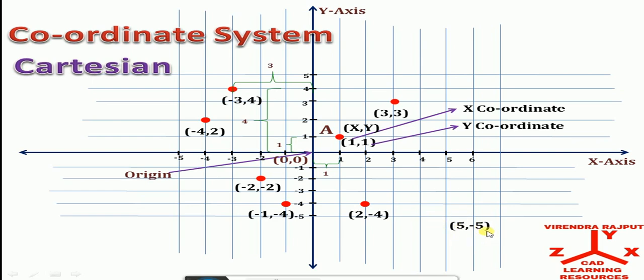Similarly, locate the point having coordinates 5 comma minus 5. Horizontal distance from the origin 5 units and Y coordinate minus 5. So point is located here.